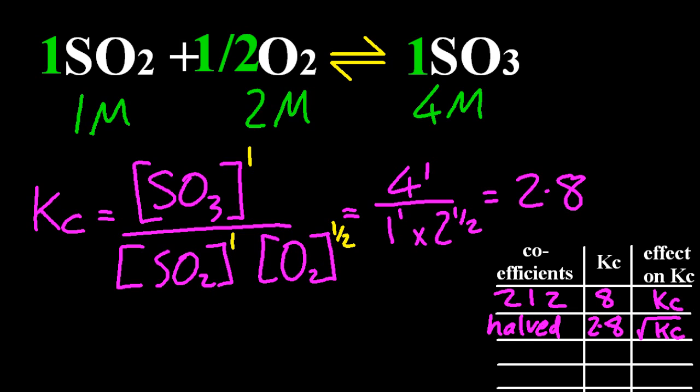In fact, I halved the coefficients and Kc became the square root of what it was before. The square root of 8 is 2.8. There's some sort of relationship there.